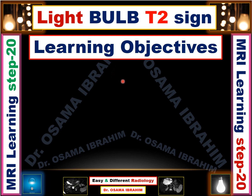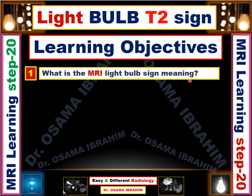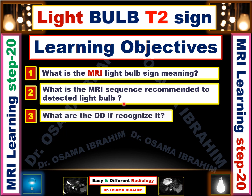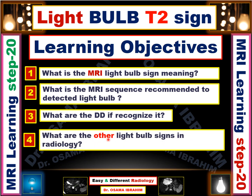The learning objectives from this presentation: first, what is the MRI light bulb sign meaning? Then, what is the MRI sequence recommended to detect the light bulb? What are the differential diagnoses if you recognize a light bulb in MRI imaging? And what are the other light bulb signs in radiology, rather than MRI?